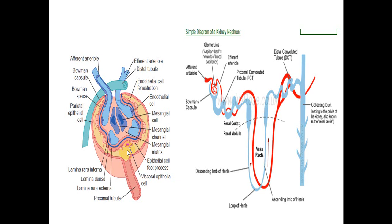The Bowman's space, also called the urinary space, is where urine is collected. The most important part of the glomerulus is the glomerular capillary wall, which consists of several layers — the outer layer comprising the epithelial cell foot processes, and the mesangial cells with the mesangial matrix.